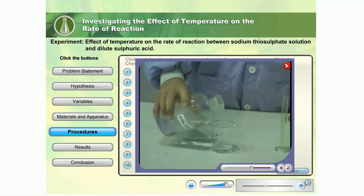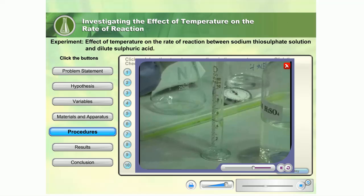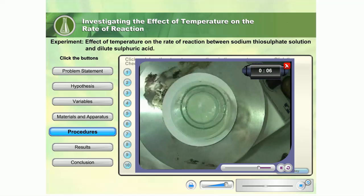Measure 5 cm³ of 0.5 mol per cubic decimeter of sulfuric acid. Pour the sulfuric acid into the sodium thiosulfate solution at one go. Start the stopwatch and magnetic stirrer immediately.